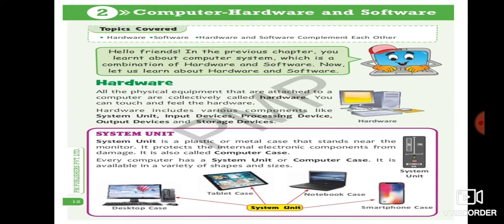So let's begin the chapter. Hello friends. In the previous chapter, you learned about computer system, which is a combination of hardware and software. Now let us learn about hardware and software. So first we are going to learn about hardware. In the previous chapter, we learned about computer system and we have seen that it is the combination of hardware as well as software. So now we are going to learn what is meant by hardware and what is meant by software.